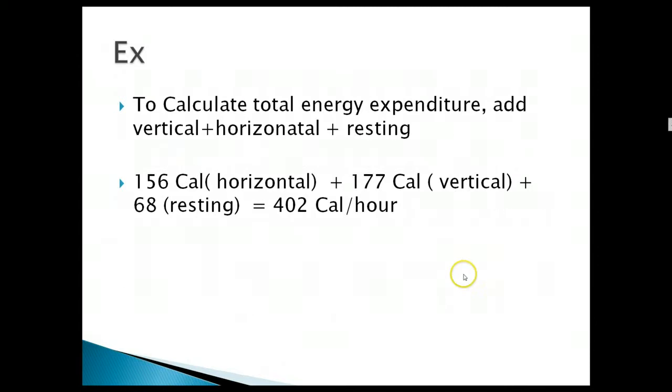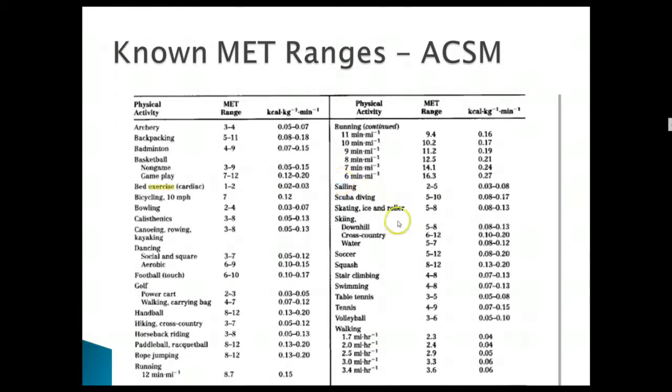To calculate total energy expenditure, you add the vertical plus the horizontal. So you add the horizontal plus the vertical, and then you've got to add in the resting because you're still burning those resting calories even when you're moving. The horizontal component and the vertical component is added. So that person in this situation would be going 402 calories an hour.